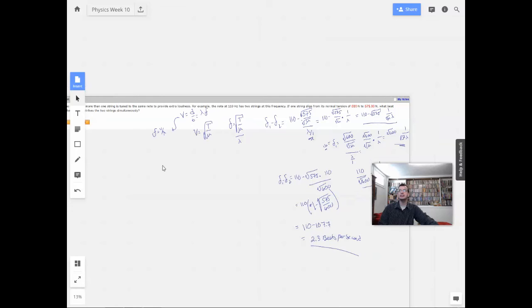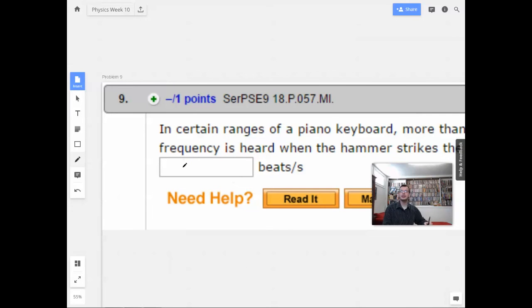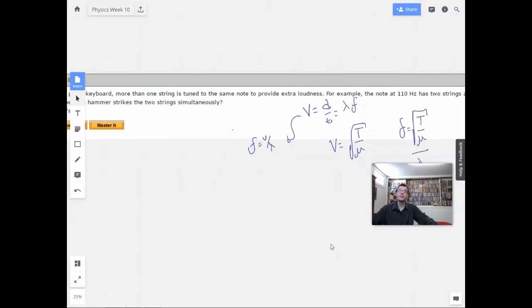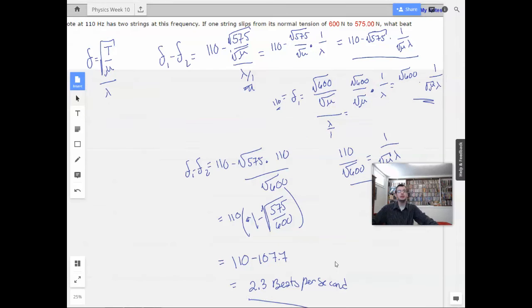As convoluted as that was, it kind of worked out well. Alright, so to backtrack real quick, what I should have done, instead of jumping straight ahead to the beats equation, I should have just found out the frequency of the wire that slipped.